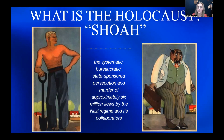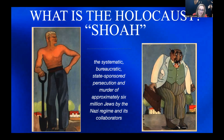The Nazis who came to power in Germany in January 1933 believed that Germans were racially superior and that the Jews, deemed inferior, were an alien threat to the so-called German racial community. Propaganda has been used throughout history to persuade people into thinking a certain way. The two depictions of the men projected in front of you is an example of one of the many ways propaganda was used during the time of the Holocaust.